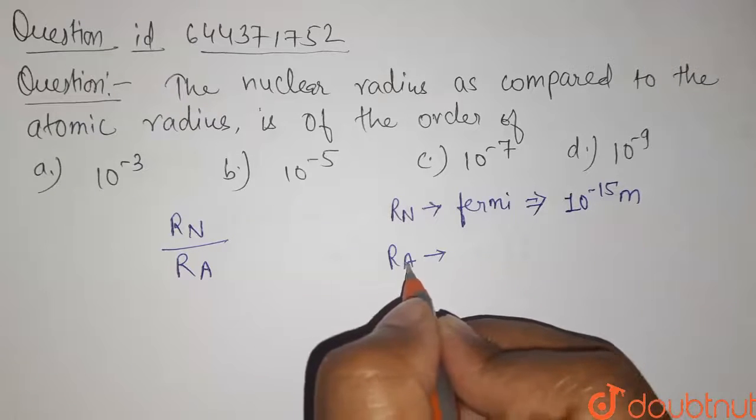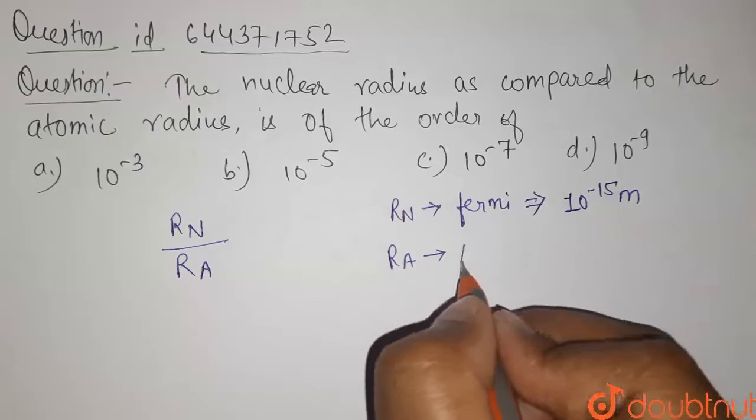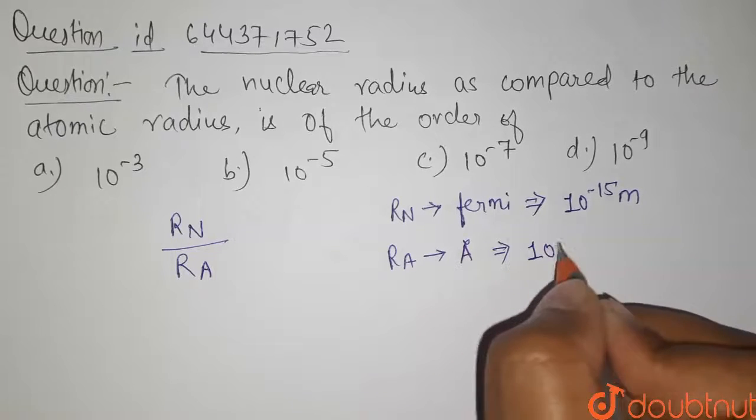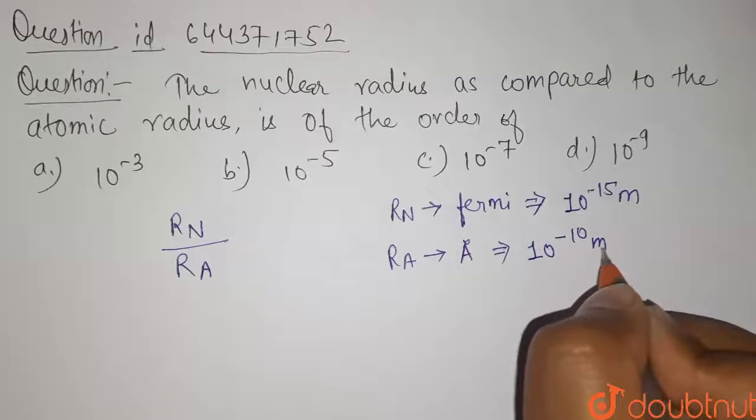The atomic radius is measured in angstrom, and one angstrom equals 10 to the power minus 10 meter.